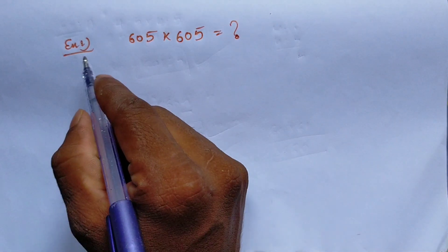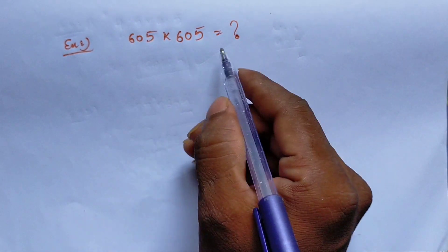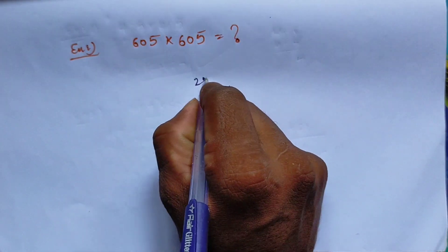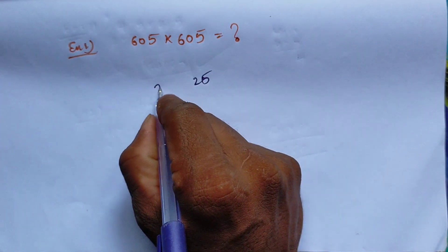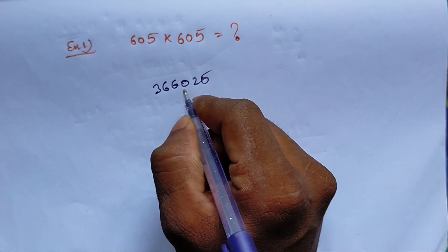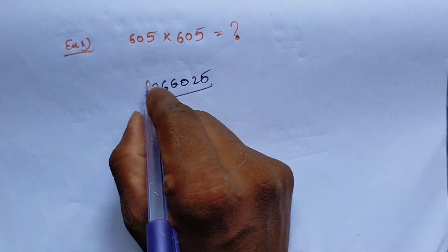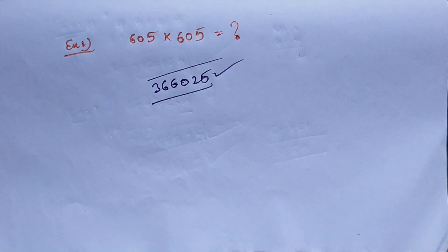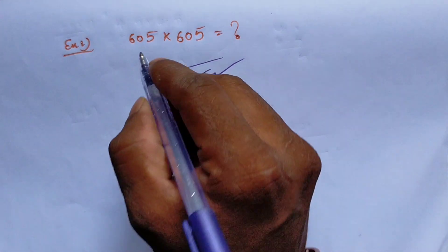First example: 605 x 605 equals question mark. Your answer is 366,025.